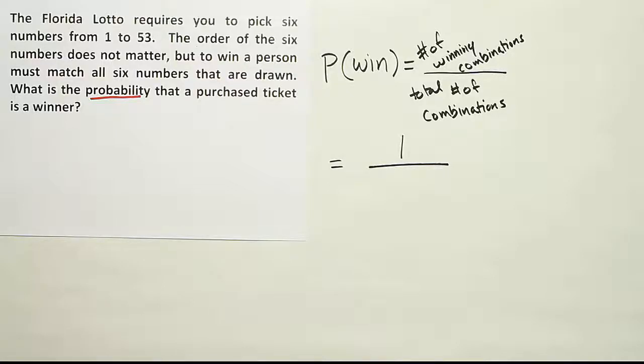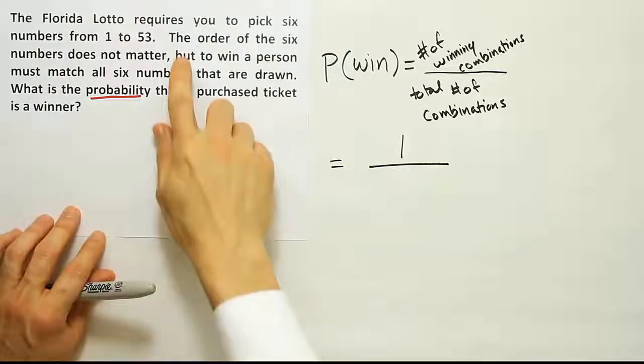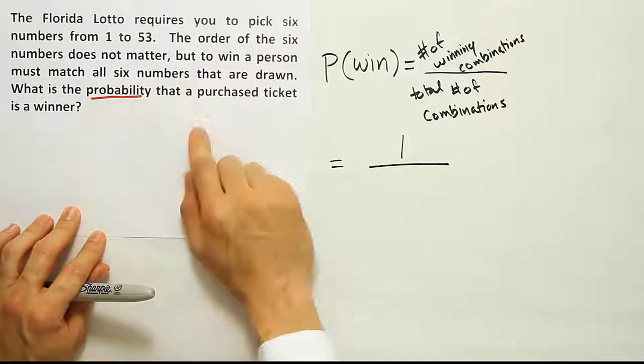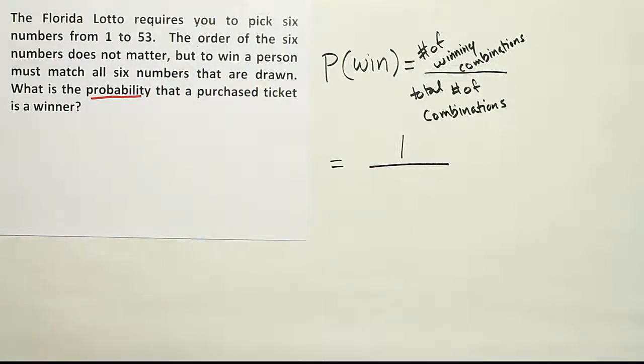Well, that's kind of in the format of a combination, right? I have a large set of things, 53 things, and I have to choose a smaller subset of six. And then the only other thing to make it a combination is if it's got no order implied, if order does not matter. And it says right here, the order of the six numbers does not matter. But to win, you have to match all six numbers, but it doesn't have to be in the same order. So it's a combination, clearly.